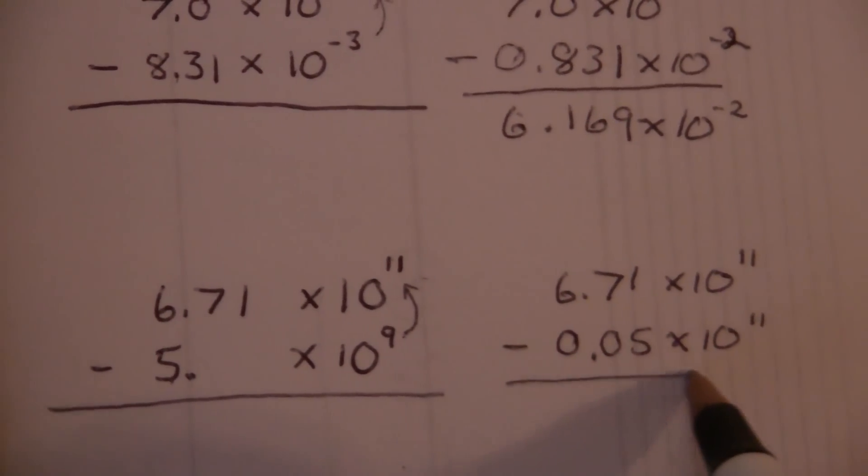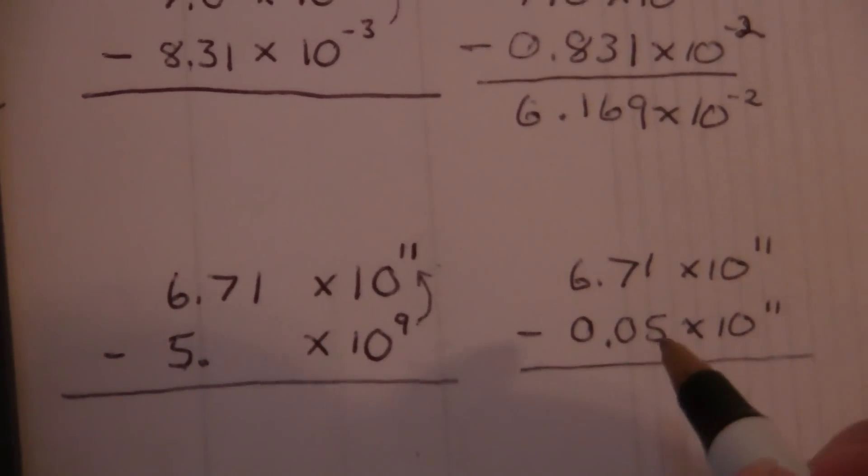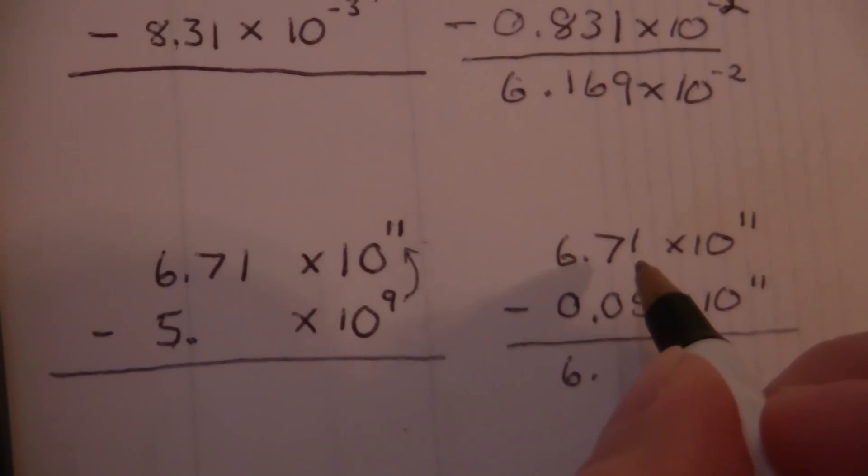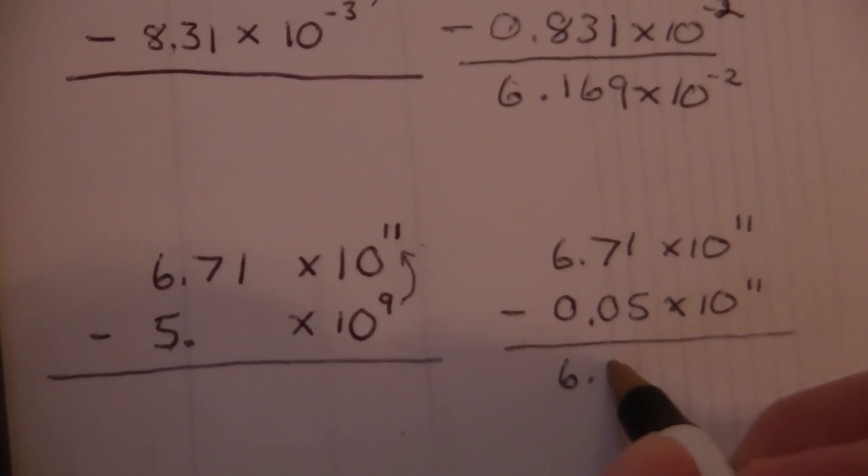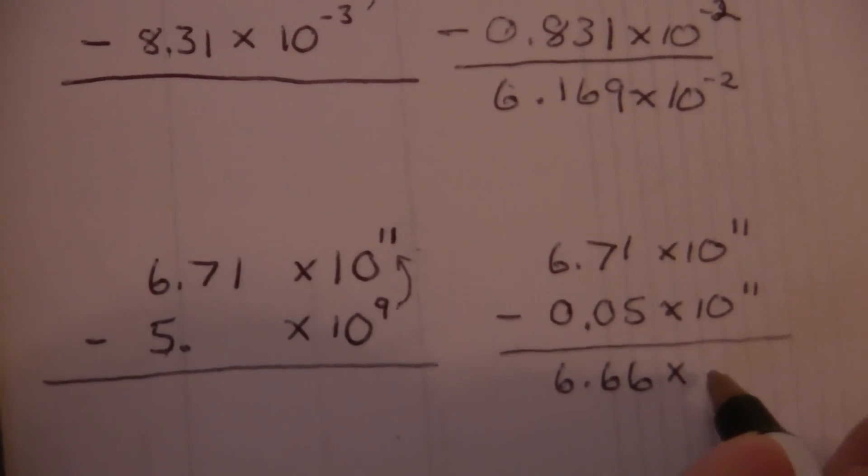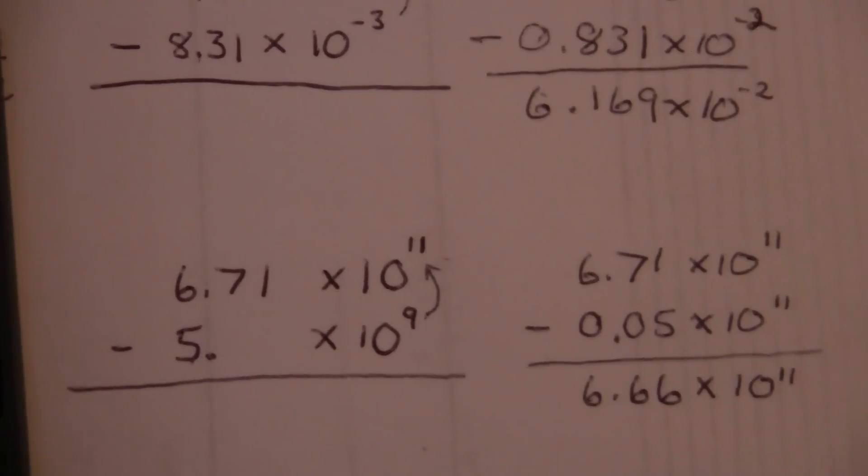Now I'm going to do the subtraction, and this one we can do in our head. 6.71 minus 0.05. That will be 6.66 times 10 to the 11th.